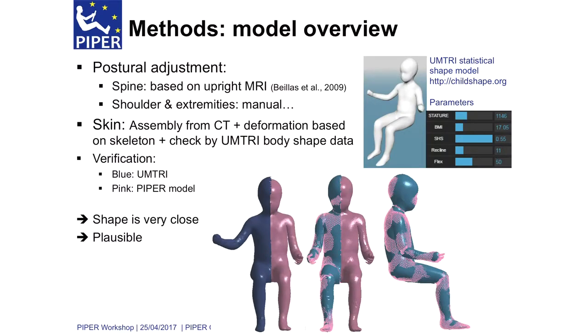The skin was verified using the nicely open data from the University of Michigan on statistical shape models for skin. You can see the model in pink at the bottom, and here for the parameters of the statistical shape model, you have the M3 model — we are pretty close. Here is the overlay, and we feel it's reasonable. This could be adjusted by scanning if we wanted something slightly different.